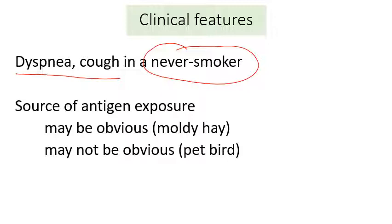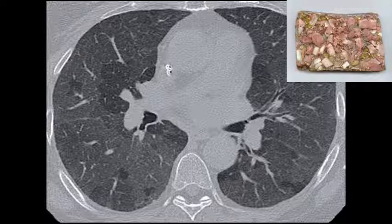The source of antigen can be obvious — for example, if a farmer gets short of breath near hay and improves away from the farm, it's pretty obvious they have farmer's lung. On the other hand, that somebody's coughing related to their pet bird might not be obvious, even to the patient. Sometimes the first person to suggest the diagnosis is the radiologist who sees characteristic features on a CT scan, or the pathologist who sees findings on a lung biopsy.